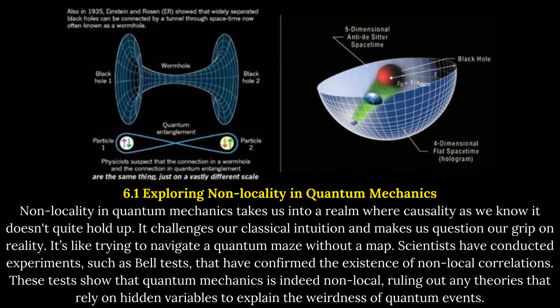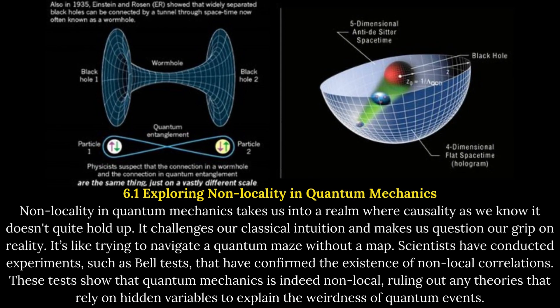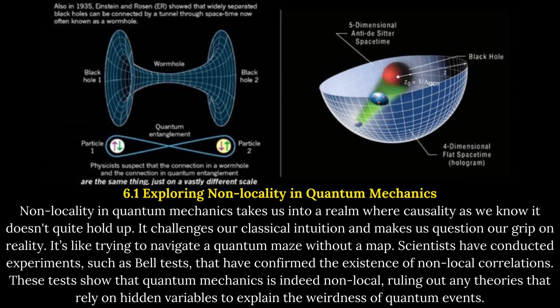Non-locality in quantum mechanics takes us into a realm where causality as we know it doesn't quite hold up. It challenges our classical intuition and makes us question our grip on reality — it's like trying to navigate a quantum maze without a map. Scientists have conducted experiments, such as Bell tests, that have confirmed the existence of non-local correlations. These tests show that quantum mechanics is indeed non-local, ruling out any theories that rely on hidden variables to explain the weirdness of quantum events.